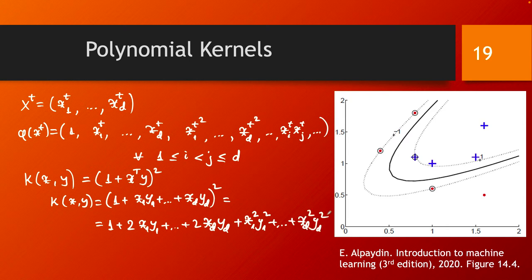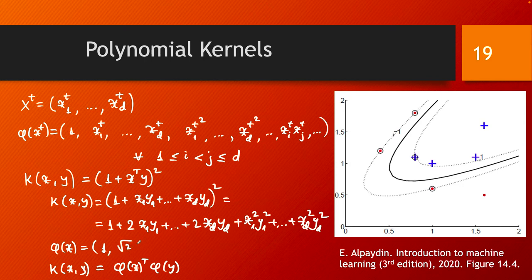This corresponds exactly to k of xy being equal to phi of x transposed phi of y, where phi is defined in the following way: phi of x is 1, then square root of 2 times x1, square root of 2 times x2, then x1 squared, all the way to xd squared.